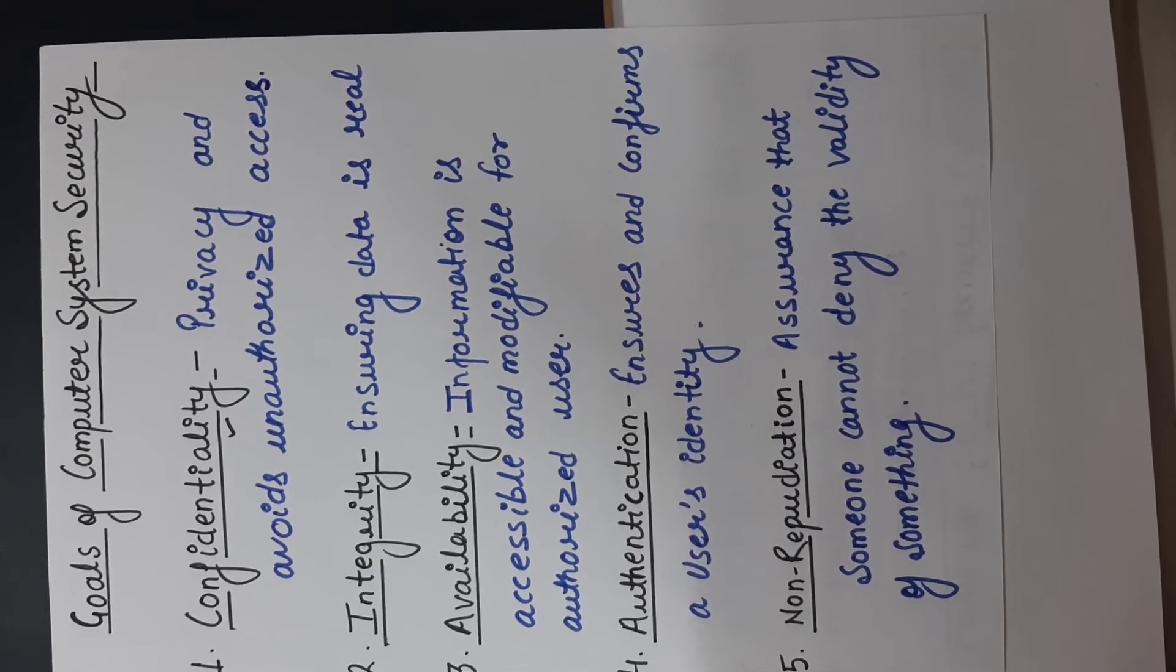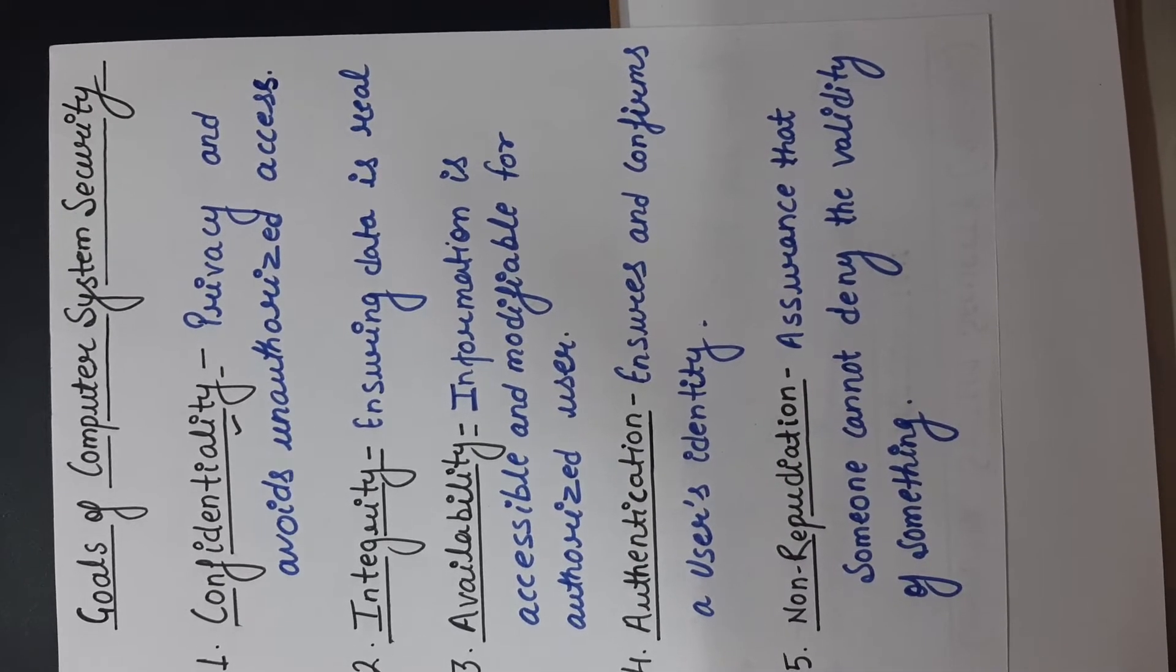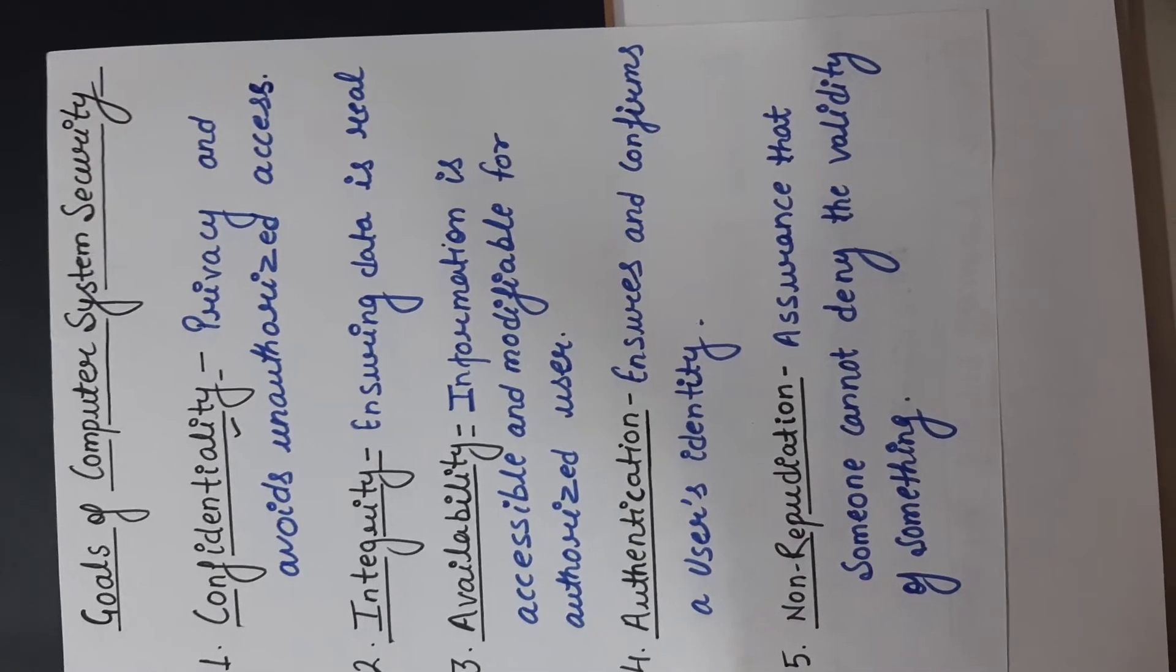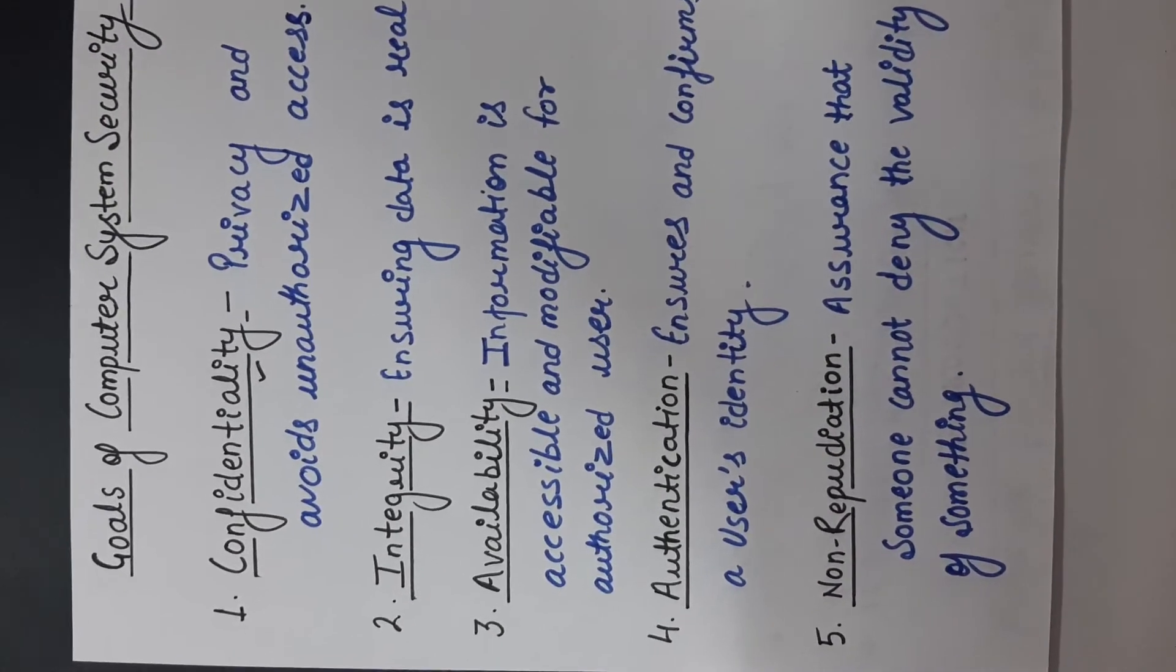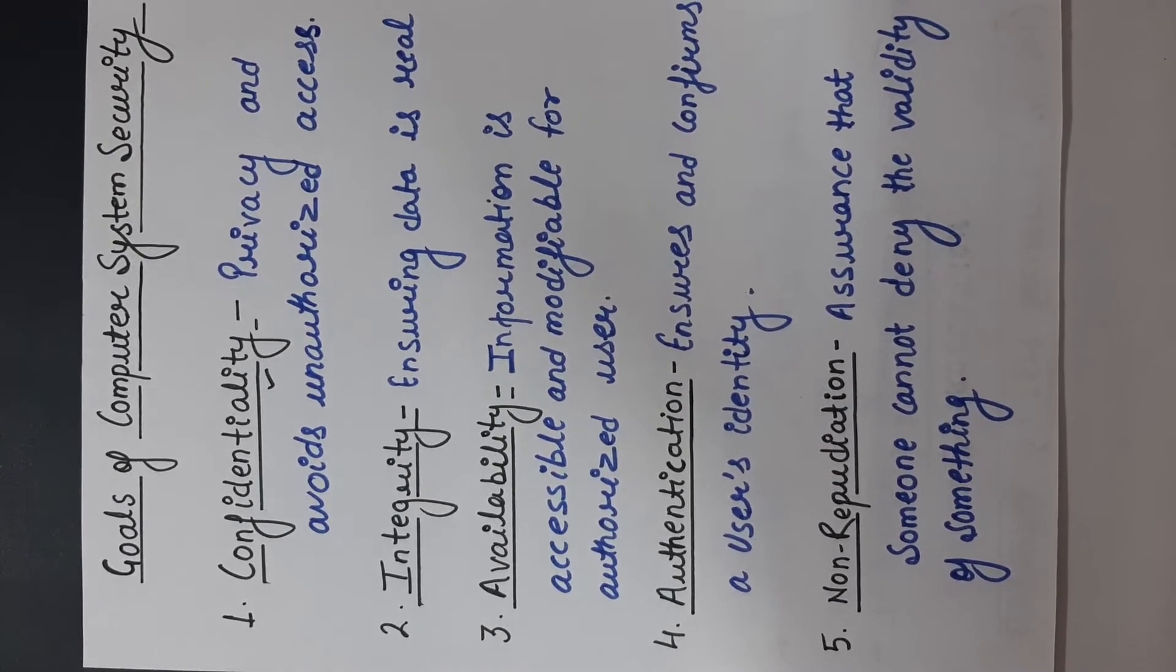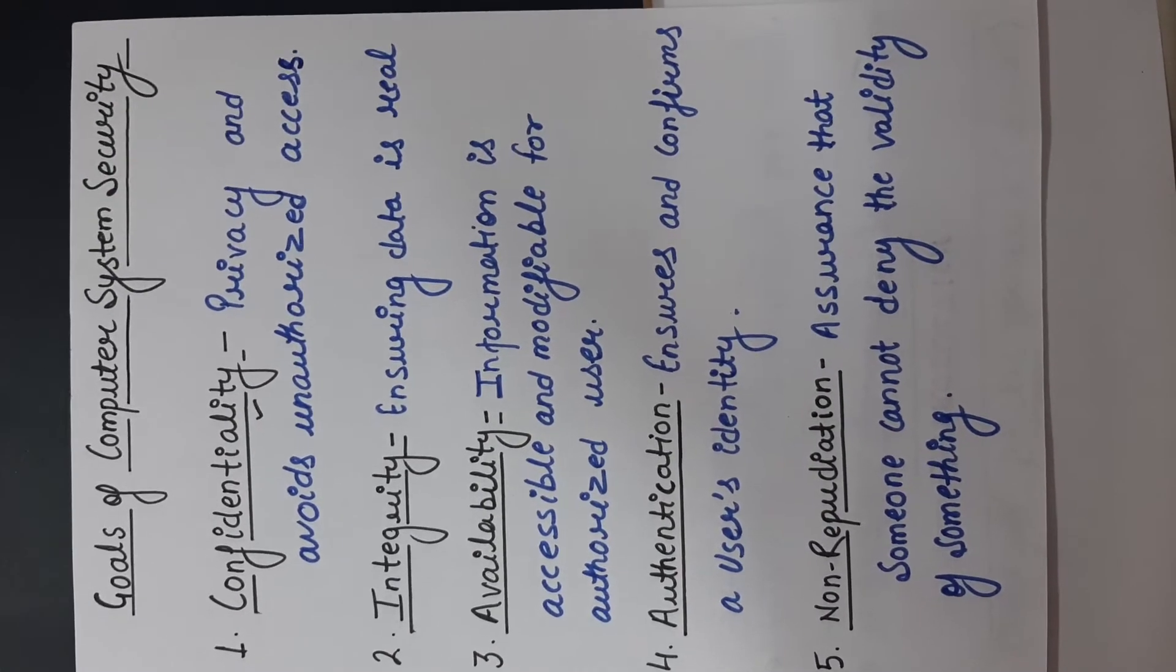Now the third point is availability. Availability means information is accessible and modifiable in a timely fashion by the authorized person. मतलब जो हमारी information है वो available है सिर्फ authorized person के लिए 24 into 7.